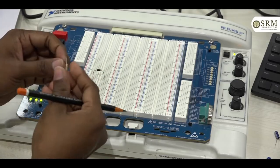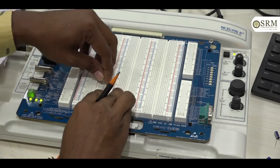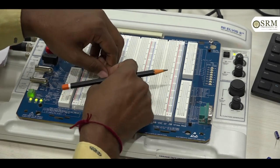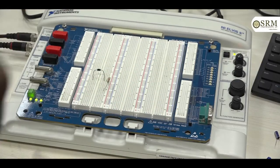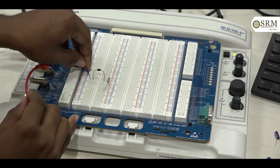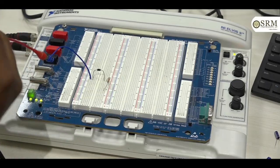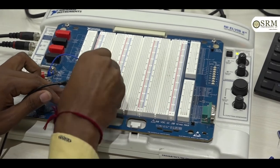And the negative terminal is connected to one end of the resistor and another end of the resistor is connected to the ground. Here, we need to give function generator input. Function generator positive terminal is given to the positive of the diode. And the negative is given to the resistor, another end.